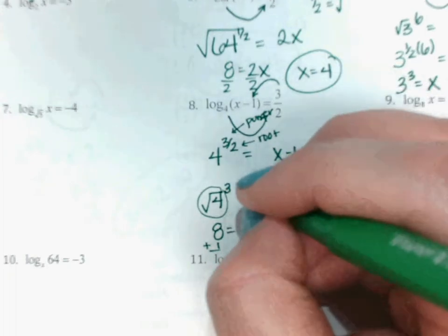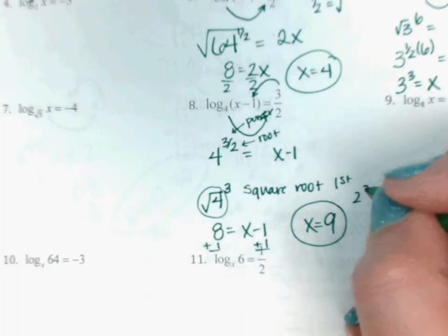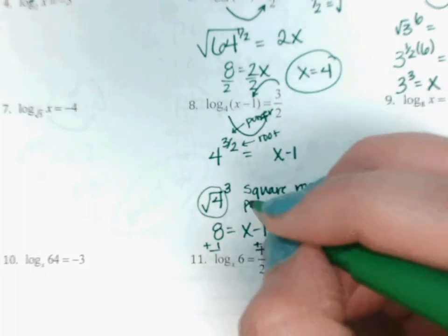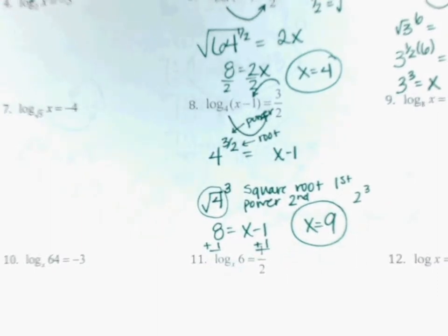You're going to square root first — that gives you 2 to the 3. Then do the power second. Or you can do 4 to the 3 first: that's 64, then square root second, and you'd still get 8. It doesn't really matter which order you do it in. The reason I tell you to do the square root first is it's easier to go smaller and then go bigger, versus if you go bigger, if it's like a thousand or something, you may not know what to do.